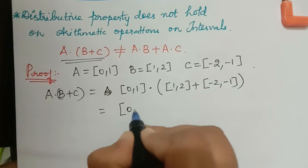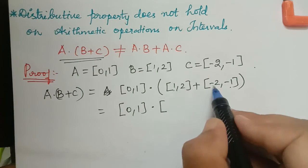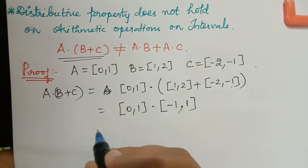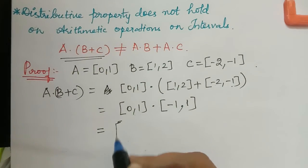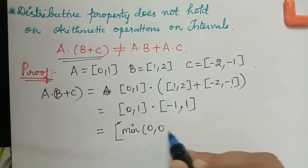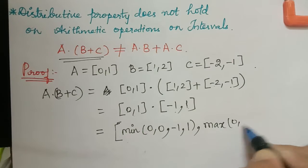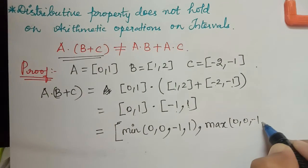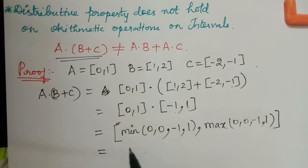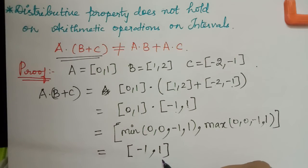So a·(b+c) equals [0,1] multiplied with ([1,2] + [-2,-1]). First let us add these two intervals: 1 + (-2) = -1 and 2 + (-1) = 1, giving [-1, 1]. Now multiplying [0,1] by [-1,1]: minimum of 0·(-1)=0, 0·1=0, 1·(-1)=-1, 1·1=1 is -1, and maximum of the same values is 1. So the result is [-1, 1].